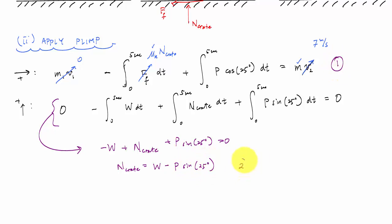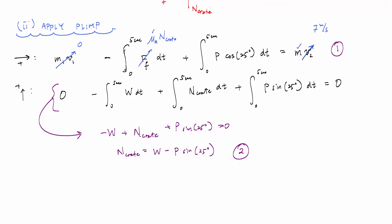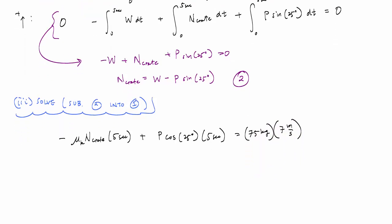We would have one equation here. This would be the other equation. And now we're going to substitute into equation one. I'm going to evaluate one right here. So that would be zero minus mu K N crate. I would have the integral with T, evaluate T from zero to five. So that would be five seconds plus P cosine 25, which is also a constant P cosine 25 degrees times five seconds equals 75 kilograms times seven meters per second. And then I'm going to substitute for N crate. And that would be minus mu K times W minus P sine of 25 degrees times five seconds plus P cosine of 25 degrees times five seconds equals 75 times seven, which is 490 plus 35, 525 kilogram meters per second.